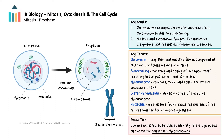The nuclear envelope, which encloses the nucleus, breaks down into small vesicles. This disintegration allows the spindle fibres to access the chromosomes, which is important for the next stage. To identify prophase in a diagram or micrograph, you can look for the distinct visible chromosomes, which are composed of two sister chromatids, spread throughout the nucleus.